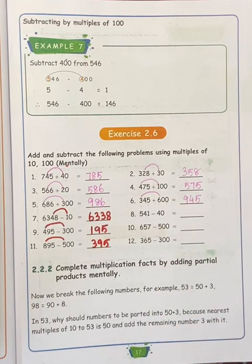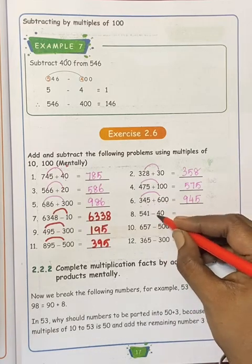Next, 541 minus 10. This symbol is correct. 40, 41, 40. First number 4 minus 4, 0, 1.